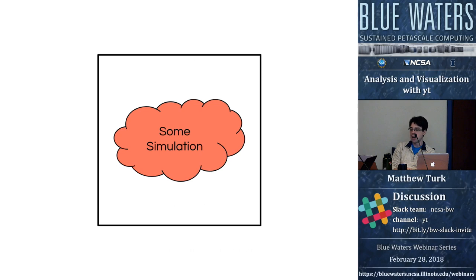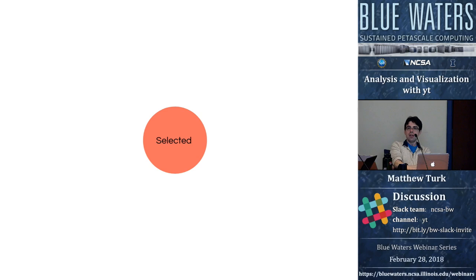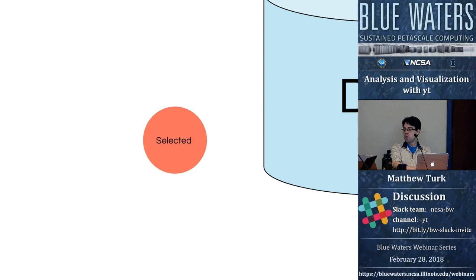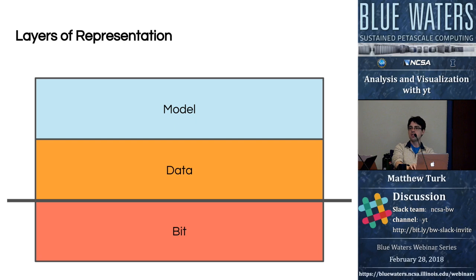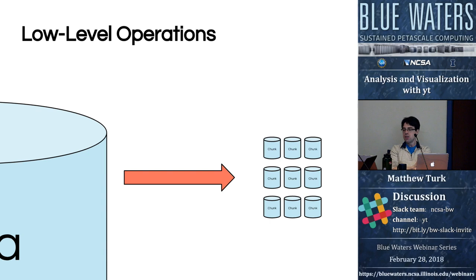Returning to the notion of the simulation and how we want to access it: if we have a simulation and want to do some type of analysis or visualization, we first need to select the data we're interested in — conducting a selection operation on that data and recognizing that the selected region is represented by data collected from some backing store. This is the interface between the bit and the data.